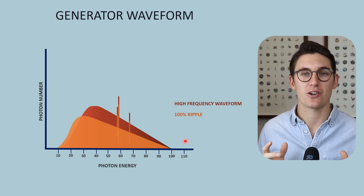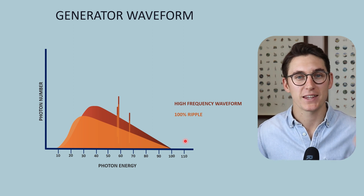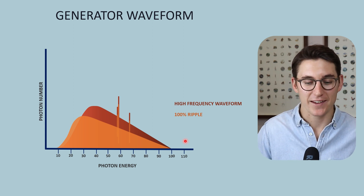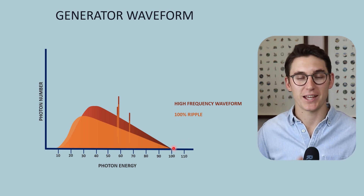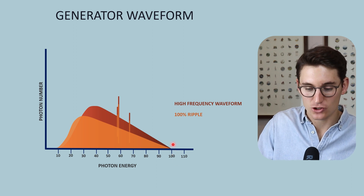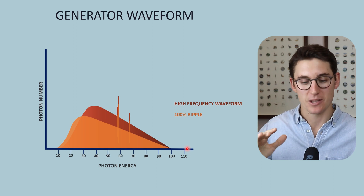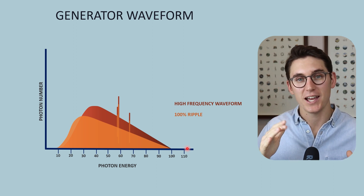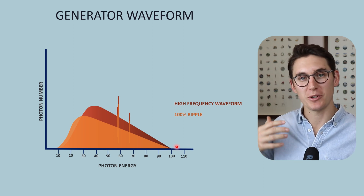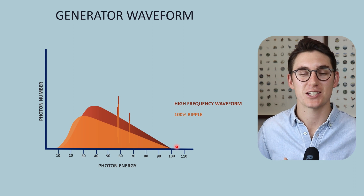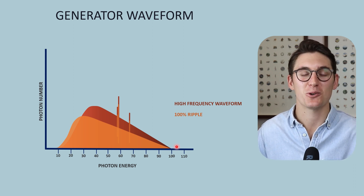This is a lot to get your head around, and I'd encourage you to learn these well — they will without a doubt come up in exams, asked in multiple different ways. You need to become familiar with where our spectrum ends in terms of photon energy, and how manipulating these five factors affects our x-ray beam quality as well as our x-ray beam quantity. In our next talk, we are going to be looking at how x-rays interact with the patient's tissues when we expose them to this x-ray beam.